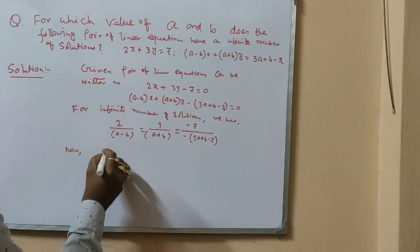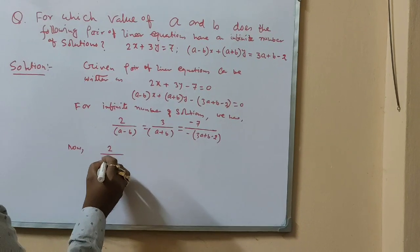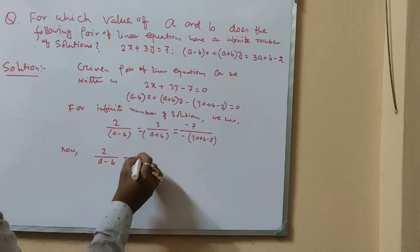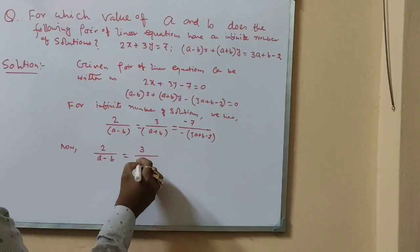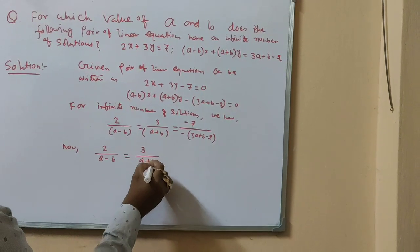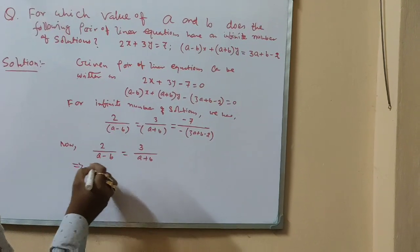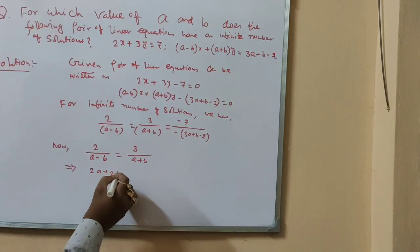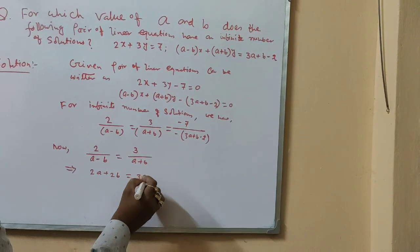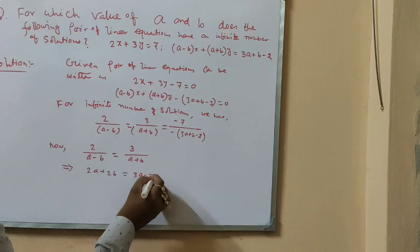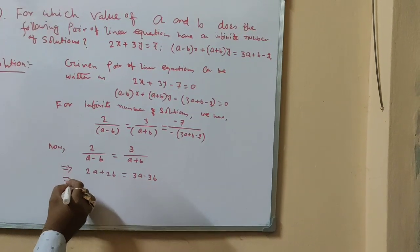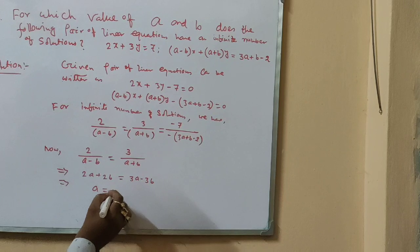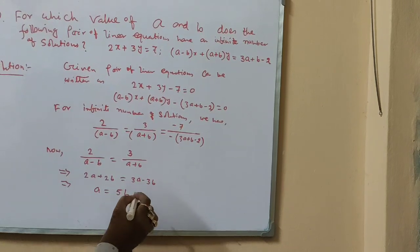From 2 by a minus b equal to 3 by a plus b, we get 2a plus 2b equal to 3a minus 3b, that is a equal to 5b. This is equation 1.